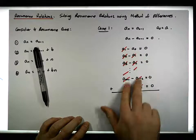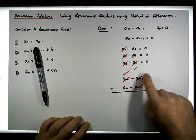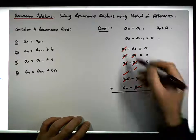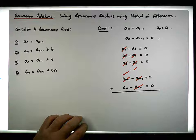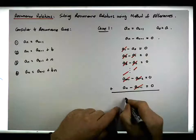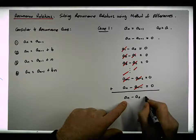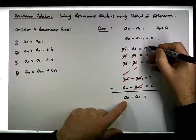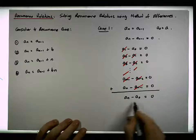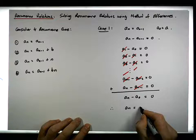If we add all of these together, this cancels with this, this cancels with this, and so on, telescoping all the way down. The only terms we're left with are the nth term — which is what we're solving for — and a(0). So we have a(n) minus a(0) equals zero, since the right-hand side sums to zero. Therefore, a(n) must be equal to a(0).